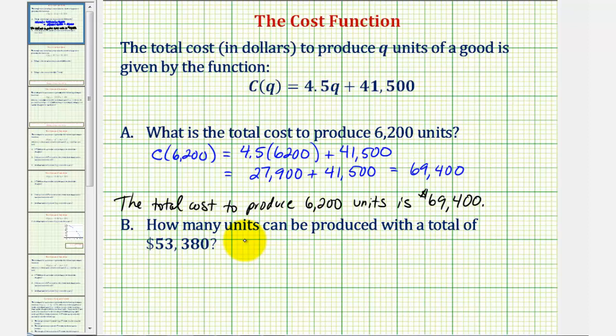For part B, how many units can be produced with a total cost of $53,380? Now we're given the total cost, or C(q), and we want to find q, the number of items that can be produced.